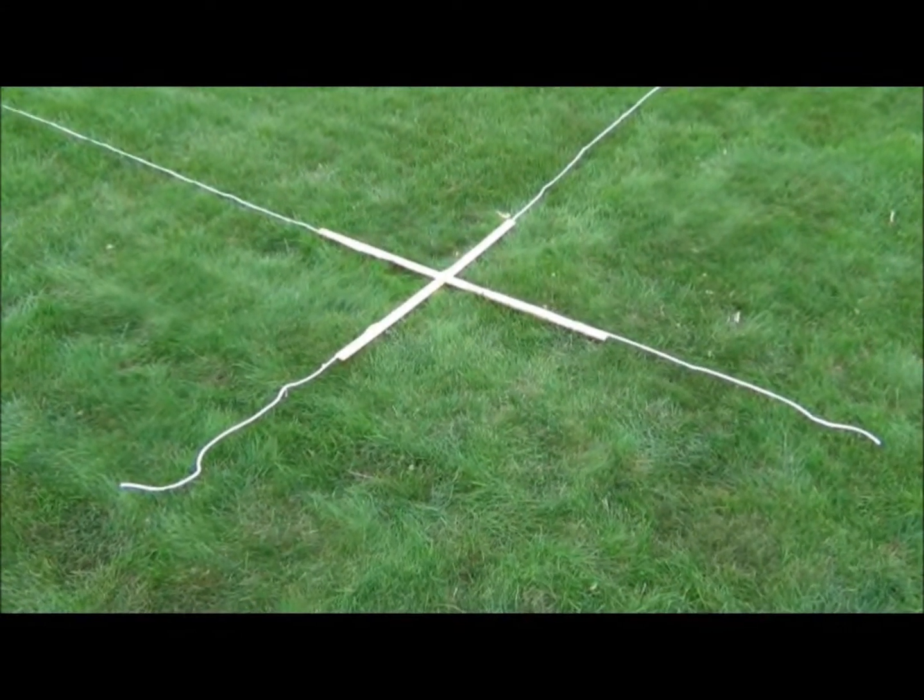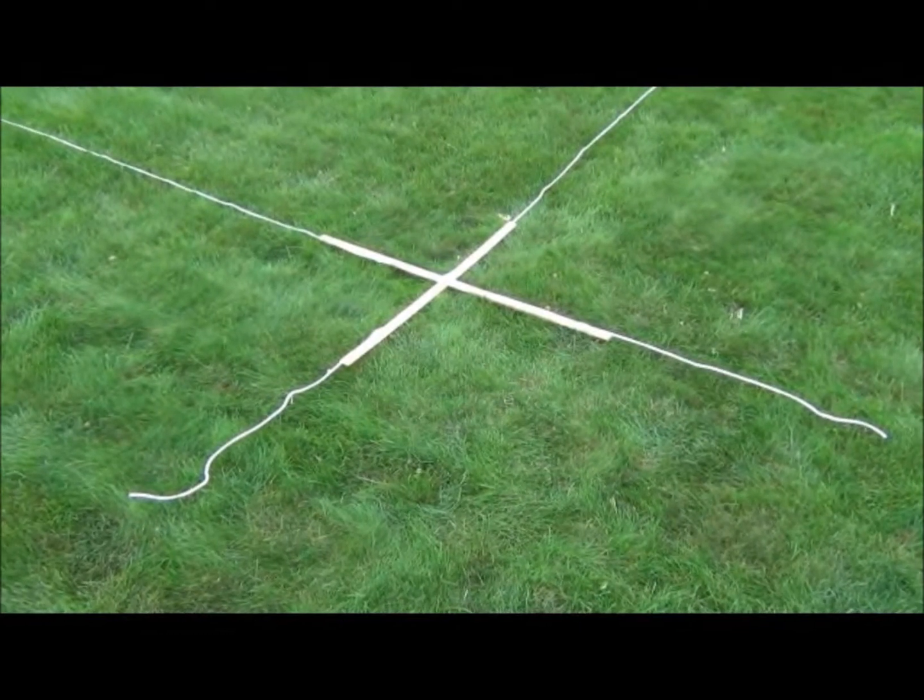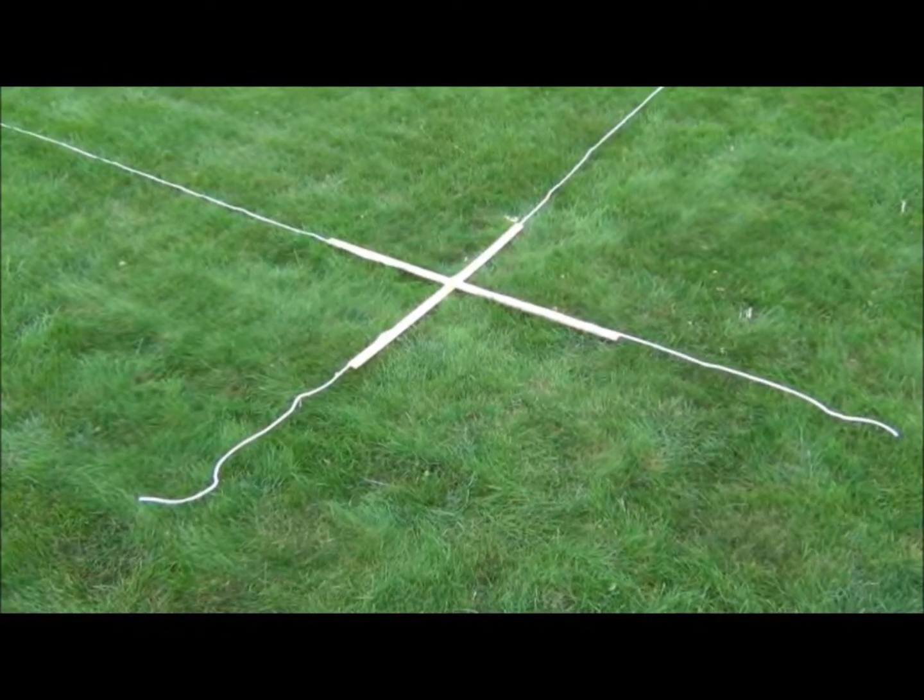The Rope Vector Lab begins by splitting the class in half. While we are upstairs, we count off by twos: one, two, one, two.